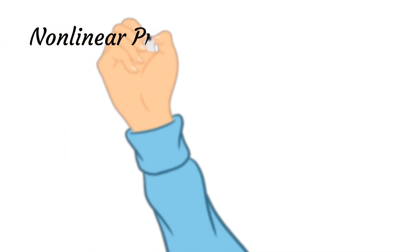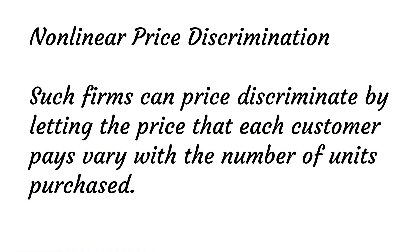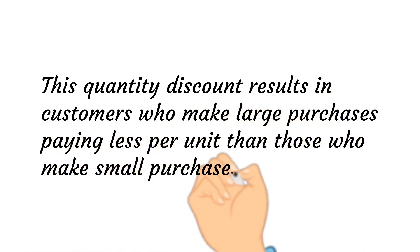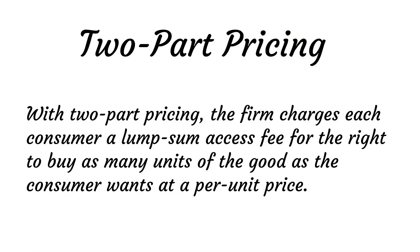Firms could use non-linear price discrimination by letting the price each customer pays vary with the number of units purchased. Firms could use two-part pricing, where the firm charges each consumer a lump-sum access fee for the right to buy as many units as they want at a per-unit price. The overall payment consists of two parts: an access fee and a per-unit price.